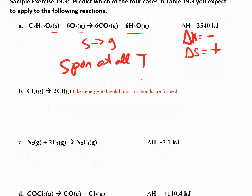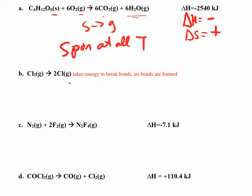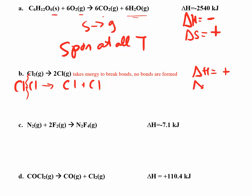The next one's a little tricky because they don't give you delta H. What's happening is you're taking chlorine and breaking the bond to get two chlorine atoms — radicals. It takes energy to break bonds, so you're putting energy in, meaning delta H is going to be positive. Then you look at delta S: you're going from one gas to two gases, so delta S is going to be positive. Both signs are the same — positive — so we know it's temperature dependent, and since they're both positive, it's spontaneous at high temperature.